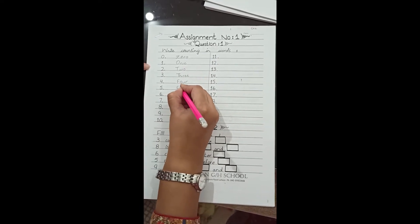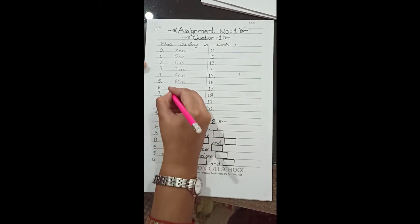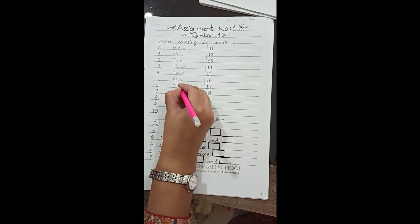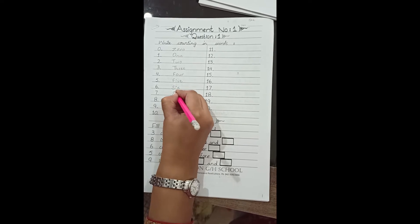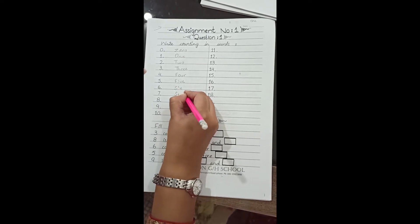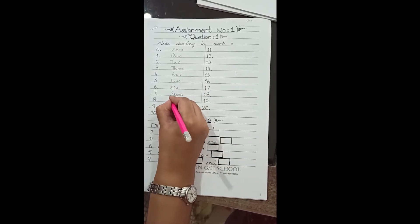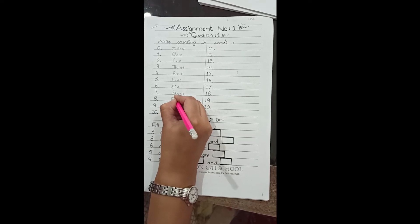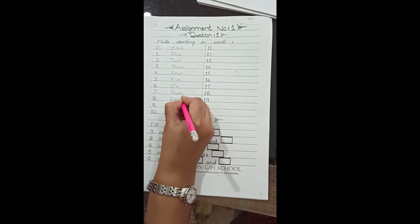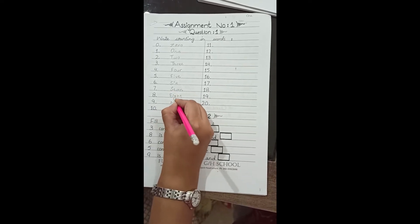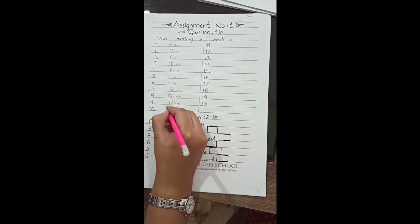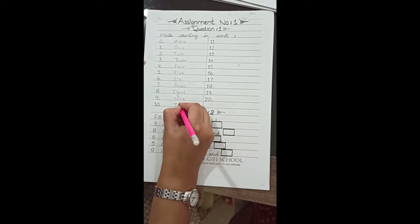Five: f-i-v-e, 5. Six: s-i-x, 6. Seven: s-e-v-e-n, 7. Eight: e-i-g-h-t, 8. Nine: n-i-n-e, 9. Ten: t-e-n, 10.